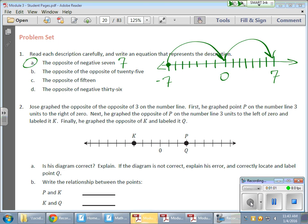Now, how do I write that as an equation? Well, I want the opposite. I'm going to start with negative 7. But since I want the opposite of that negative 7, I'm going to write it like that. So the opposite of a negative 7 equals 7. That's how you write it as an equation.